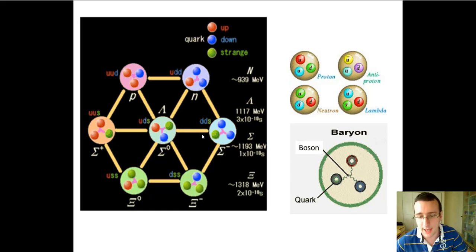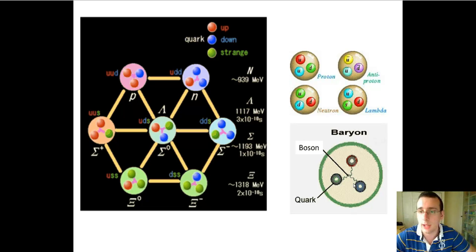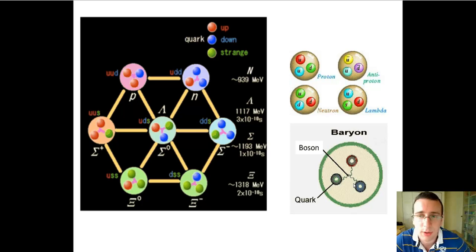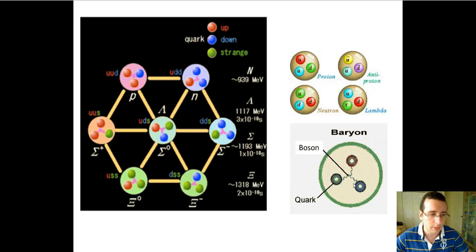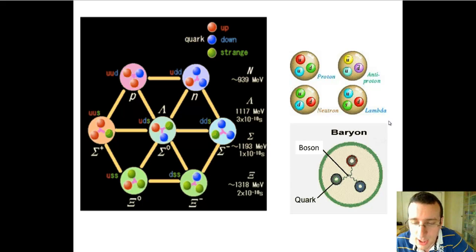Most matter in the universe is baryon matter. There are baryons which occur outside of the nucleus, called hyperons — including the omega and the lambda baryons — but they will be short-lived since they're made of strange quarks, which are unstable quarks.